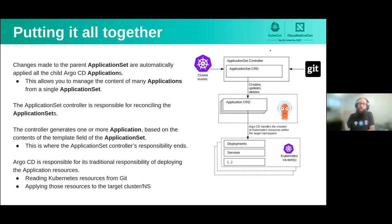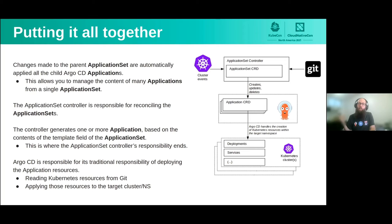Let's sum up everything we just saw. When you create an Application Set resource, the controller automatically detects it. If you have generators based on external sources like Argo CD clusters or Git, the controller automatically detects those, inserts them into the template, and the template is rendered into Argo CD applications. As you modify the Application Set resource, it automatically updates all child applications. When you delete the Application Set resource, it deletes all the applications. The Application Set and its child applications are always kept in sync.